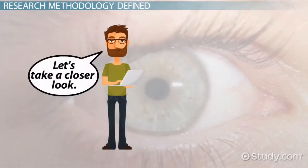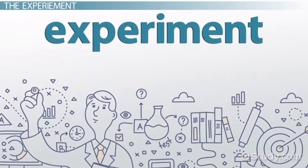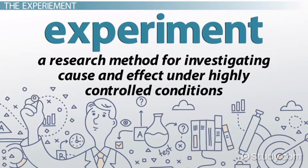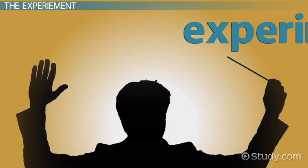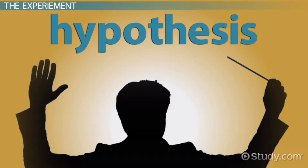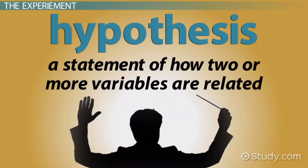Now let's take a look at each of the different research methods in detail. An experiment is a research method for investigating cause and effect under highly controlled conditions. When conducting an experiment, researchers will test a hypothesis — a statement of how two or more variables are related.